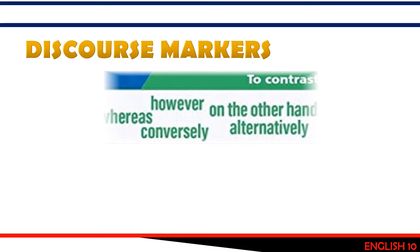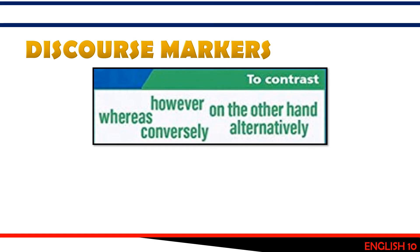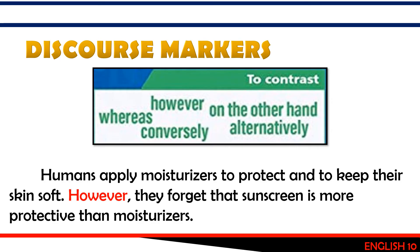The next group of discourse markers is used to show contrast. These include: however, whereas, conversely, on the other hand, alternatively. Example: 'Humans apply moisturizers to protect and keep their skin soft. However, they forget that sunscreen is more protective than moisturizers.' Here, 'however' shows that the second sentence is in contrast to the first.